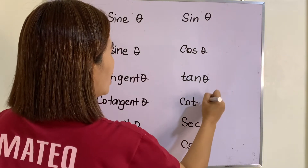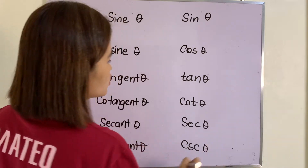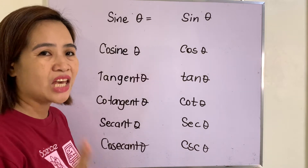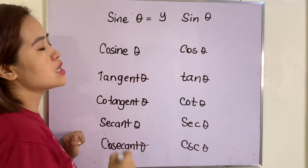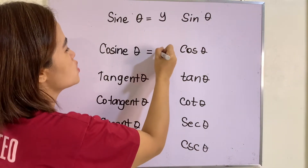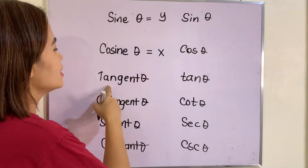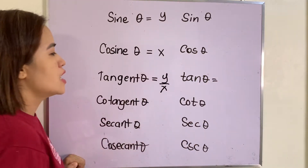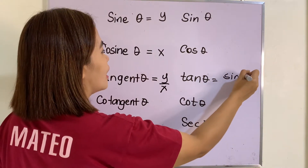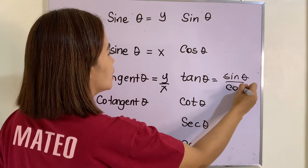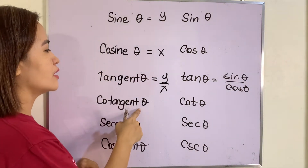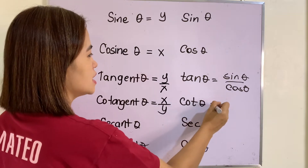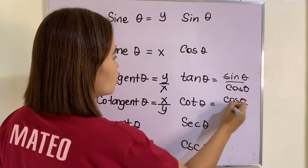So how are we going to get the values of these? Always remember that sin theta is always equal to y, your cosine theta is always equal to x, your tangent theta is always equal to y over x — that means it is equivalent to sine theta over cosine theta. Your cotangent theta will be equal to the reciprocal, which is x over y, or that is equal to cosine theta over sine theta.